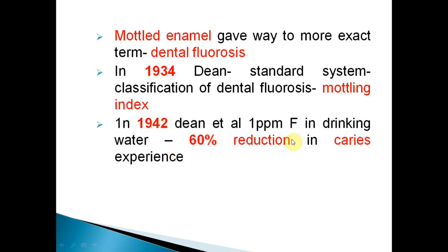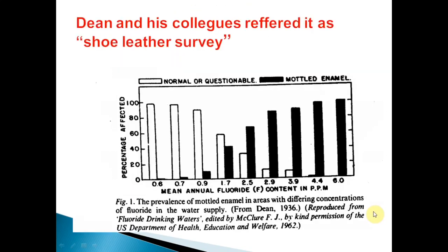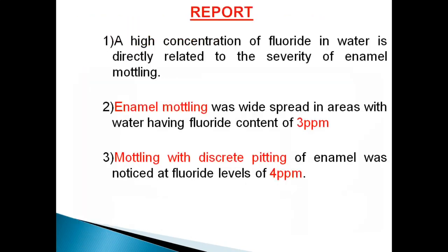In 1942, Dean found that drinking water with 1 ppm fluoride would reduce caries by 60%. He then conducted the 21-city study — different from the shoe leather survey — done by Dean, Arnold, and Elbow in 1942. This study investigated caries experience among 7,257 children aged 12–14 from 21 cities in four states. The aim was to prove an inverse relationship between fluoride concentration and dental caries, since wherever fluorosis was present, dental caries was very low.